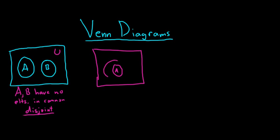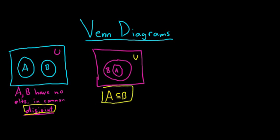In the second case, we have a smaller set A inside a bigger set B, with our universal set U around them. In this case, it looks like every element in A is also in B. So in this picture, we're saying that A is a subset of B. In the first picture, we said they have no elements in common — they're disjoint. In the second picture, A is a subset of B.